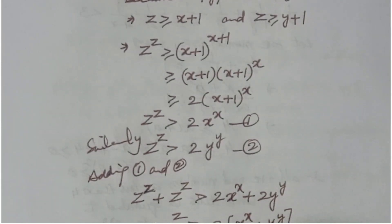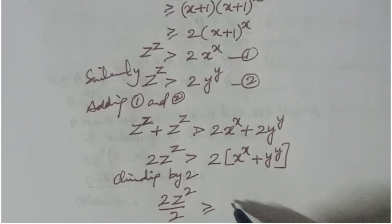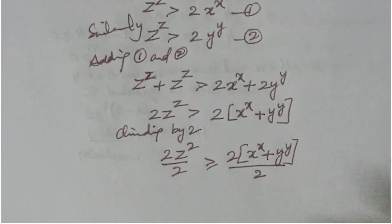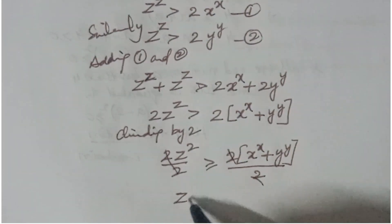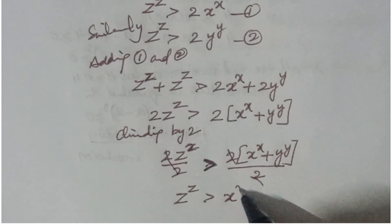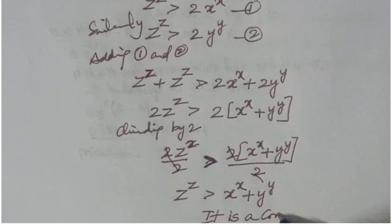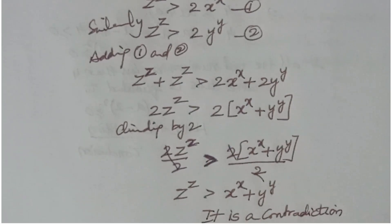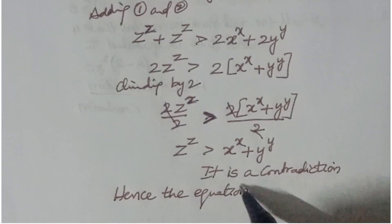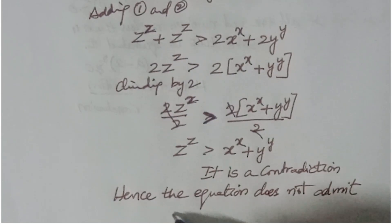Dividing both sides by 2, z^z is greater than x^x plus y^y. But by our assumption, x^x plus y^y equals z^z, so z^z is strictly greater than z^z — this is a contradiction. Hence, the equation does not admit a positive integer solution.